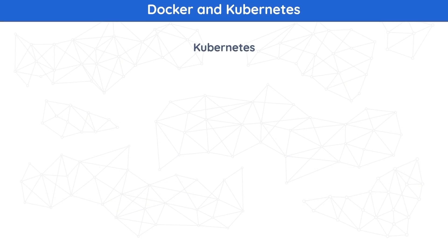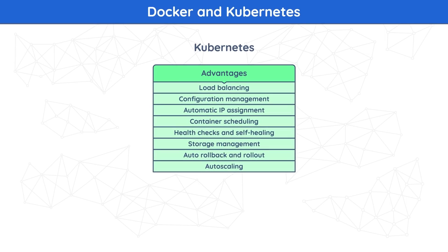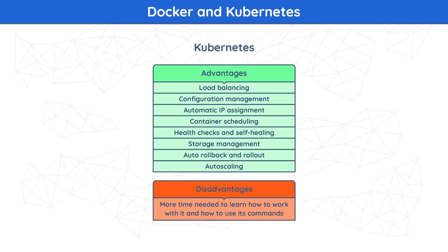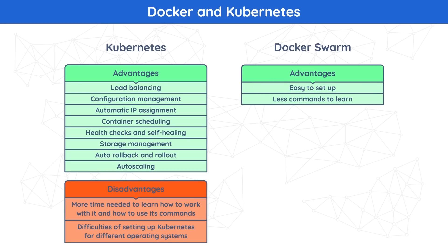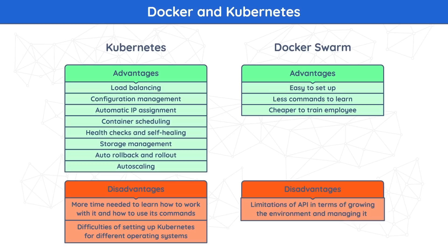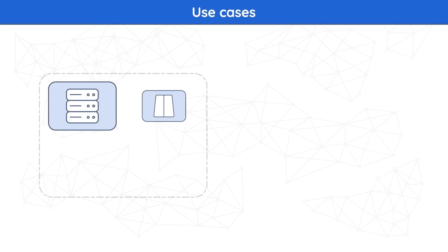Kubernetes is excellent in terms of flexibility in scaling and managing your IT environment, but it has its own drawbacks. For example, it's really hard to learn the necessary commands, which takes a lot of time. It also isn't easy to configure Kubernetes in an environment with different operating systems. Docker Swarm, by contrast, uses the Docker CLI to manage all relevant container services. Docker Swarm is easy to set up, has fewer commands to learn, and makes it cheaper to train employees — though a drawback is that it binds you to the limitations of the Docker API.